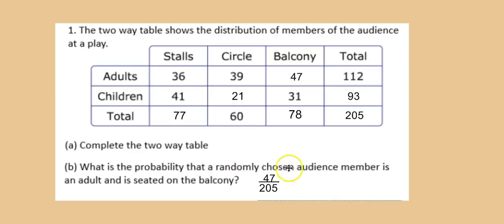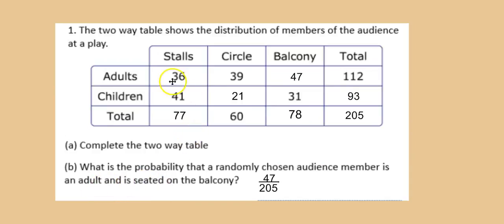Compare your completed table to mine. Now, for the question: what is the probability that a randomly chosen audience member is an adult seated in the balcony? 'Randomly chosen audience member' tells us we're looking at all 205 people. The number of adults in the balcony is 47, so the answer is 47 over 205.